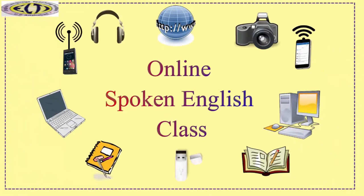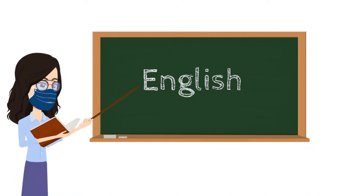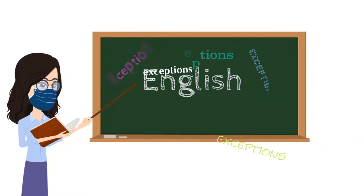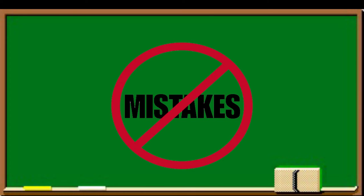Hello everyone, welcome back to the online spoken English class. Errors in the English language are very common. A typical feature of English is that it does not always conform to simple rules — it has many exceptions, and one should practice the usage to get used to correct English. In this module, we shall know about the commonly misused forms which most often give trouble. Mistakes are often made by using wrong prepositions after certain words.